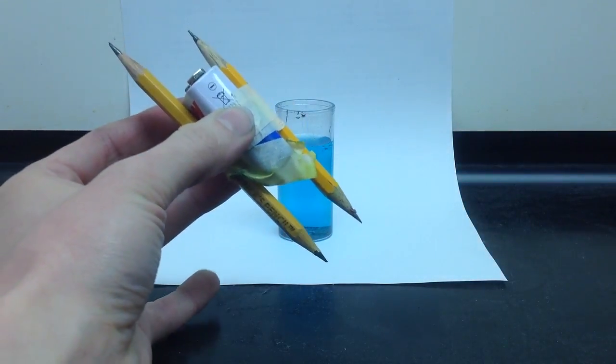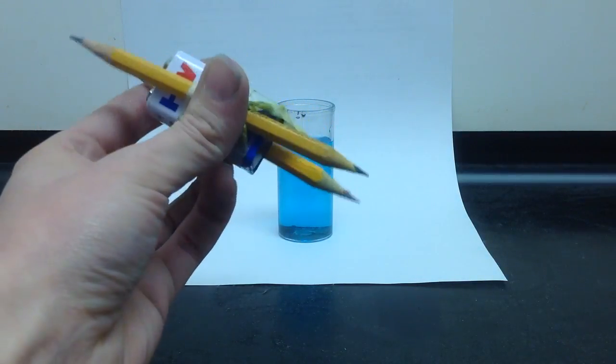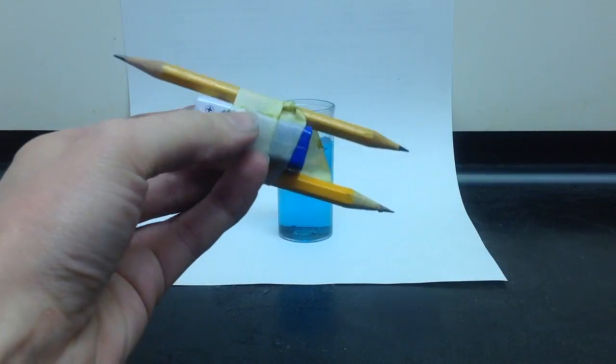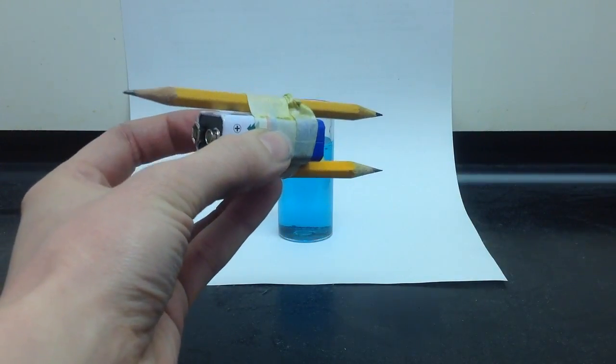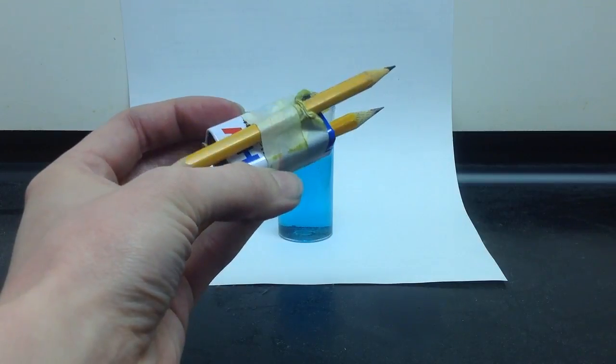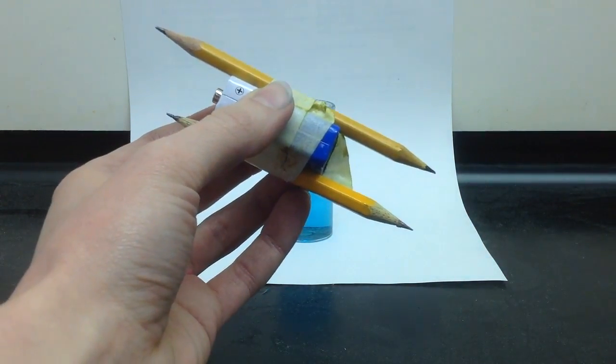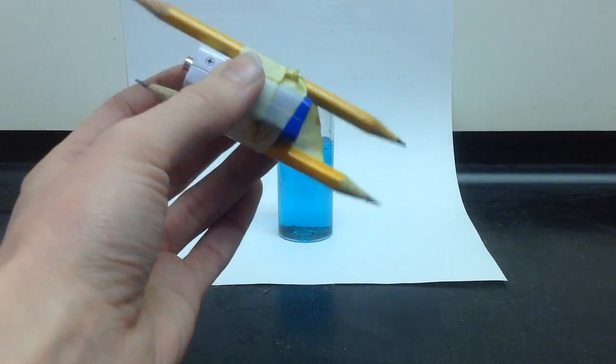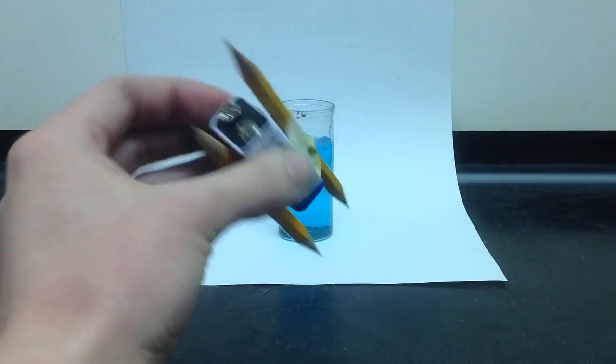So here, I have a 9-volt battery, and it is taped to two pencils that are sharpened on both sides. The pencil lead is an effective electrode, so it's going to help transfer the current from the battery into the solution in order to separate into its components.